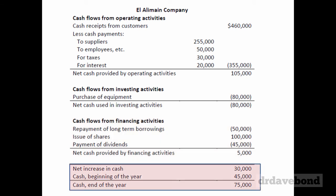To finish it all up at the bottom, you show the net overall change — $105,000 minus $80,000 plus $5,000 — then show the cash at the start of the year and end up with the cash at the end of the year. The $45,000 is what you had at the start and $75,000 is the cash balance at the end of the year from the balance sheet. And that's it — creating a statement of cash flows using the reconstruction method.